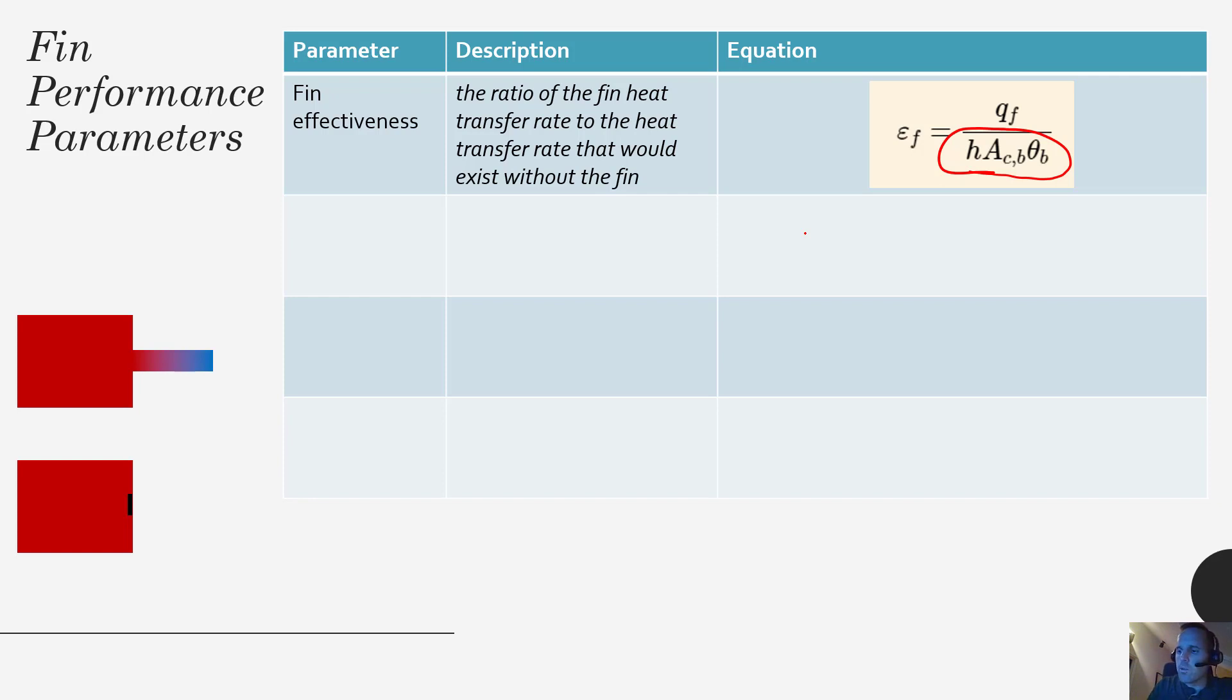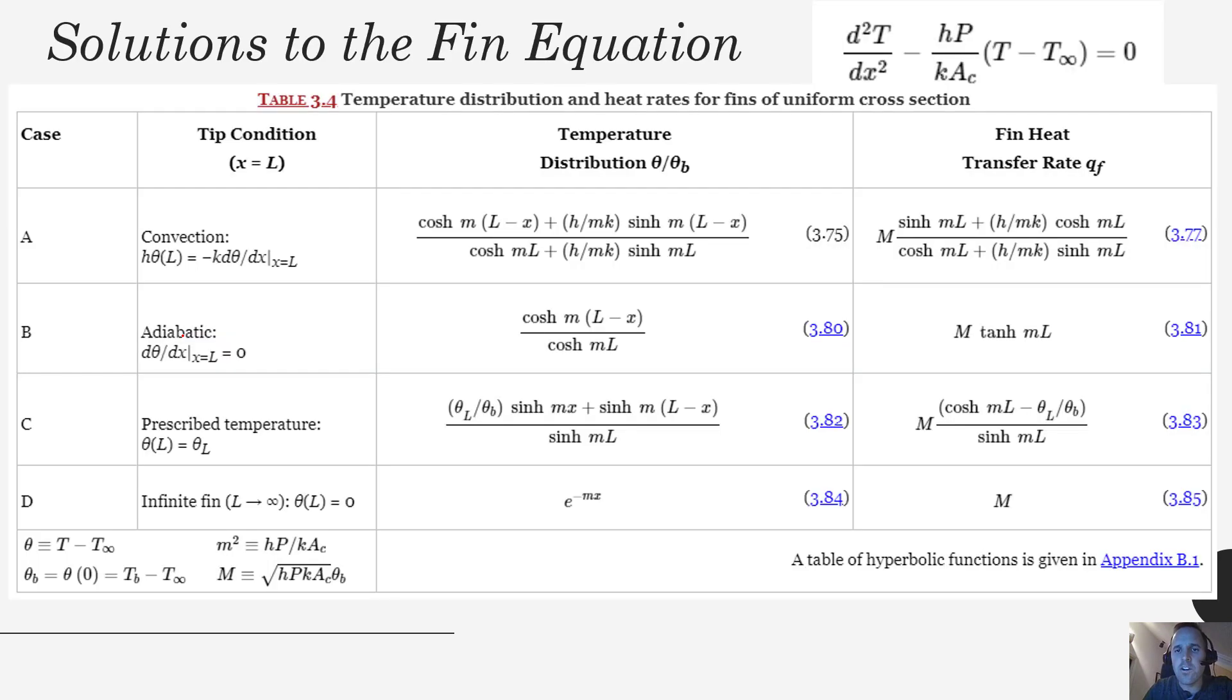So in order, if you recall from the last video lecture, because this fin is changing temperature as you go, calculating its total heat transfer rate is not trivial because it gives off a different flux at each point because its temperature is always changing. So we can, if it's a fin of uniform cross section, cross sectional area,